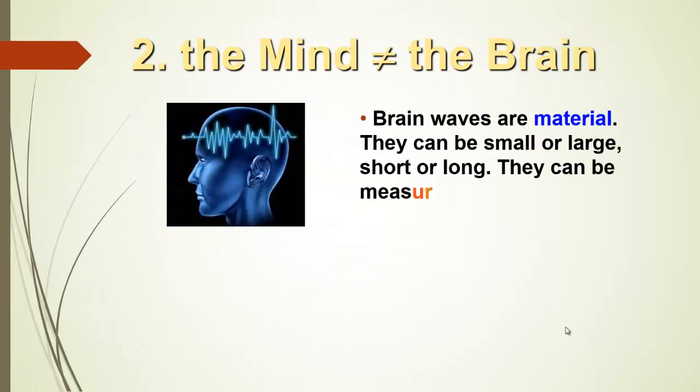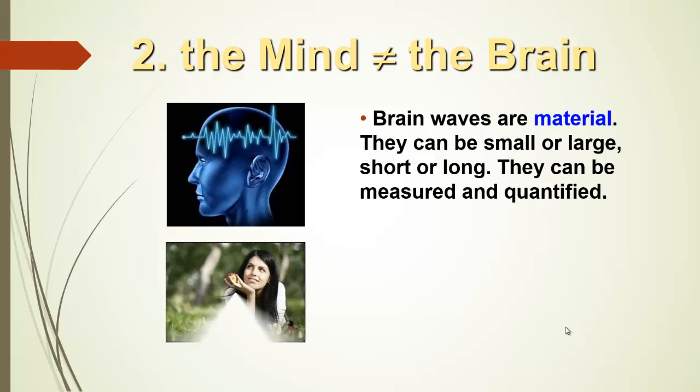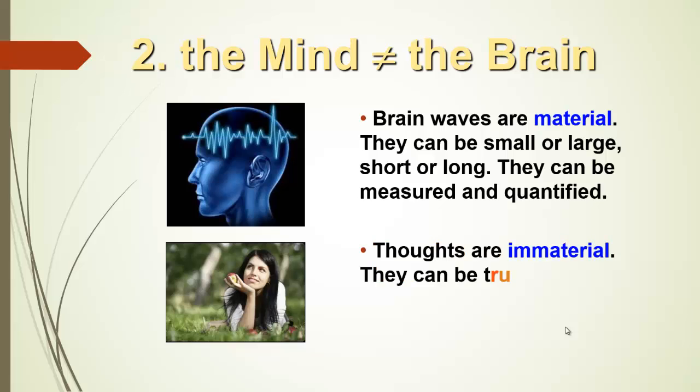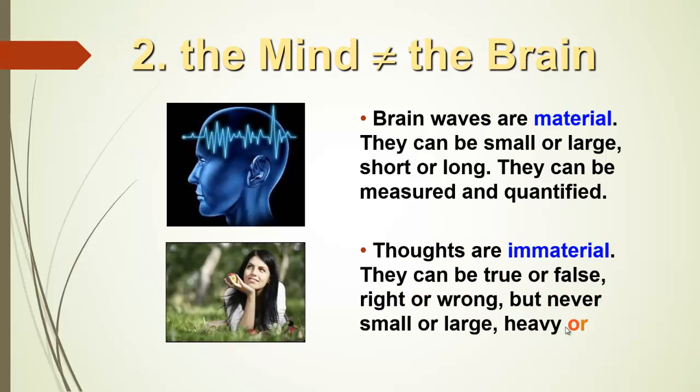Brain waves are material. They can be small or large, short or long. They can be measured and quantified. But thoughts are immaterial. They can be true or false, right or wrong, but they can never be small or large, heavy or light. They are unquantifiable. So we are comparing apples with oranges.